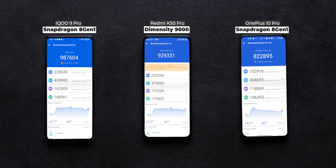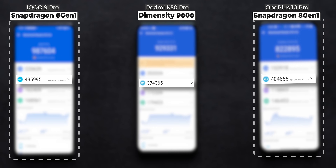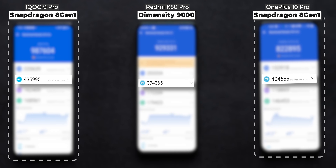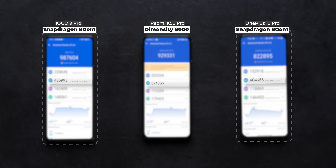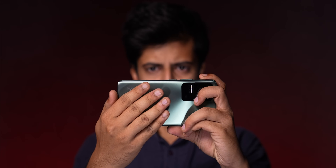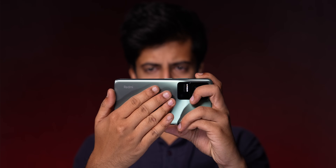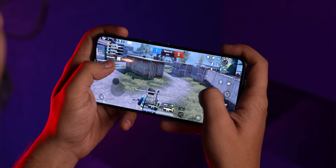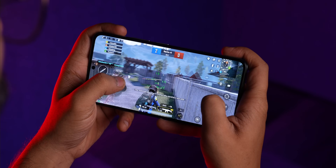Despite that, the 8 Gen 1 inside the OnePlus 10 Pro and the iQoo 9 Pro actually had a higher GPU score in all three runs compared to the Dimensity 9000 inside the Redmi K50 Pro. This just indicates that the Adreno GPU is more powerful than the Mali GPU inside the Dimensity 9000. But these numbers don't necessarily translate to real-life performance, because generally GPU hardware has slightly more headroom and game developers don't actually push it to that extent.